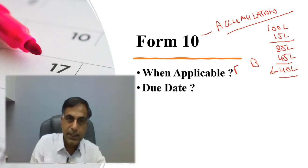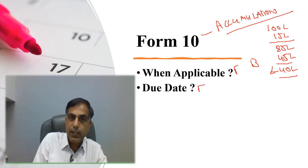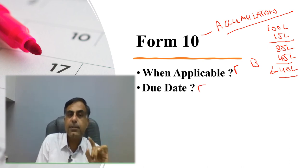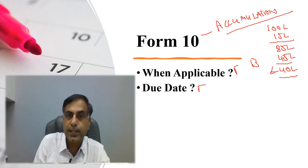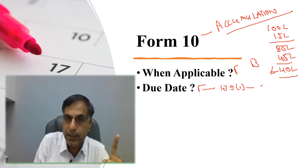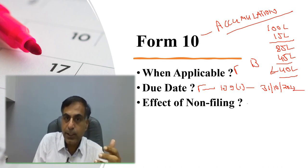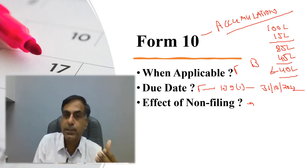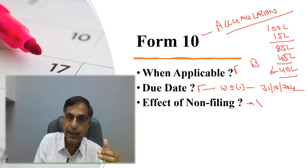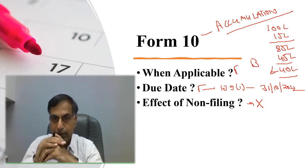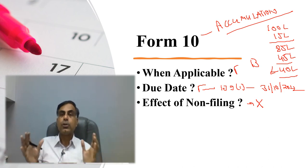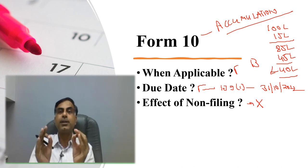Now what is the due date of this form 10 filing? Because if you are interested in claiming the accumulation benefit, then you have to ensure that form 10 is filed on or before 1-39-1 due date. That is for assessment year 22-23, again going to be 31st of October 2022. And what is the effect of non-filing? Merely you treating as if I have accumulated would not be sufficient. As a charitable or religious trust, if you are not filing, then there will not be any benefit of accumulation provided to you.